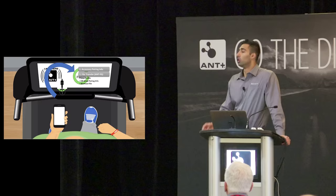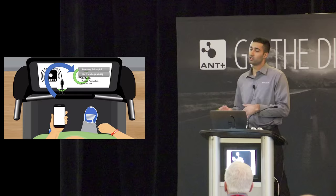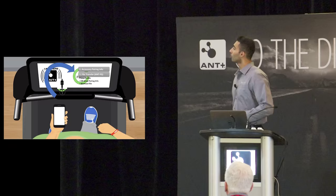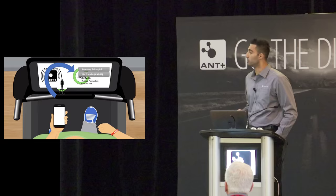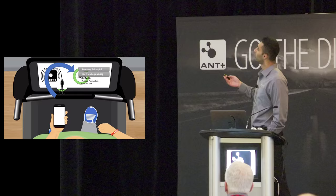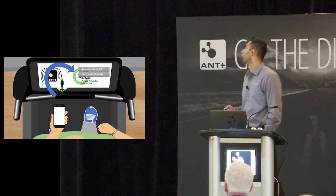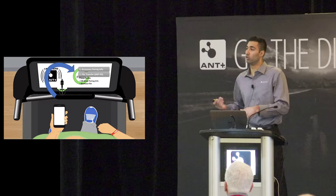All certified devices supporting the FE device profile have the ANT+ Link Here logo, indicating the user should bring their device within a few centimeters of the console to be the targeted pairing device. Once close enough, the two devices are paired. Any user information exchanged is sent over ANTFS — the ANT file share protocol — including accessory pairing information for the dedicated broadcast channel, user info, heart rate strap pairing information, and optionally a workout file.